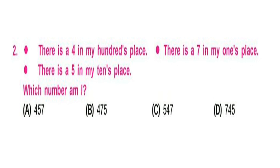Question 2. There is a 4 in my 100's place. There is a 7 in my 1's place. There is a 5 in my 10's place. Which number am I? A. 457. B. 475. C. 547. D. 745.